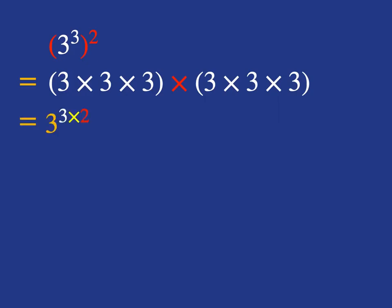What about 3 cubed squared? Well, 3 cubed is just 3 times 3 times 3, and we're squaring that. So in other words, we've got to multiply it by itself. And so what do we have in total in terms of the number of threes multiplied together? We've got 2 groups of 3 threes, so in total we've got 2 times 3, which is 6 threes.